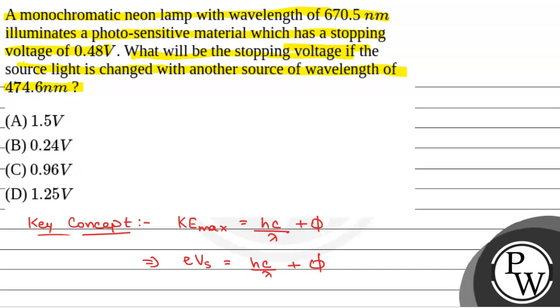Now, when lambda 1 is equal to 670.5 nanometer, stopping potential Vs is equal to 0.48 volt. And when lambda 2 is equal to 474.6 nanometer, then we have to calculate the stopping potential. So, we will call it as Vs2.